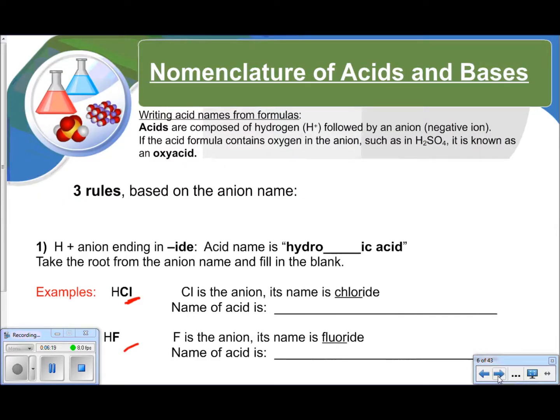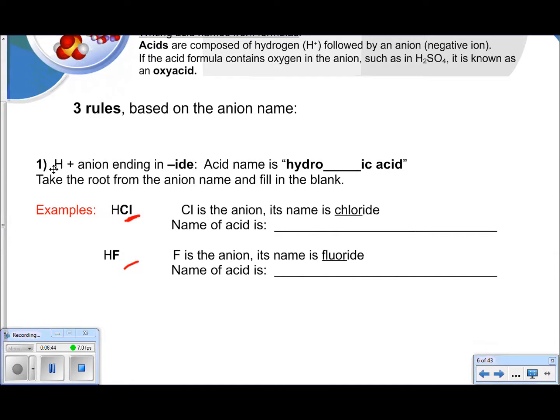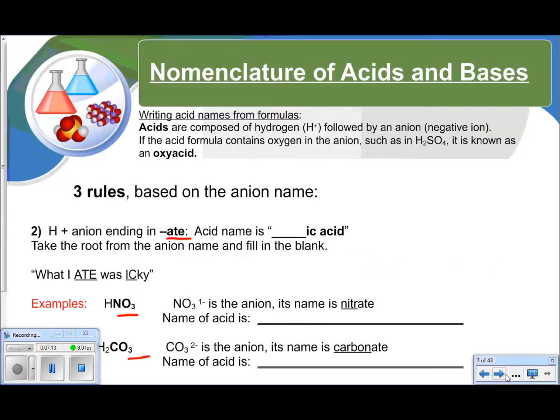Just a little review of the nomenclature of acids and bases. Acids are composed of a hydrogen followed by an anion. If the acid formula contains oxygen in the anion, such as H2SO4, it is known as an oxyacid. There are three rules based on the anion name when naming an acid. The first example, hydrogen plus an anion ending in '-ide.' The acid is a hydro-blank-ic acid. So HCl is hydrochloric acid and HF is hydrofluoric acid. And like I said, this should be a review.